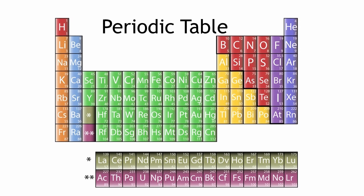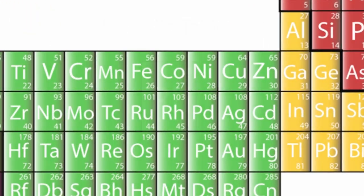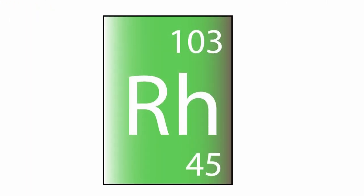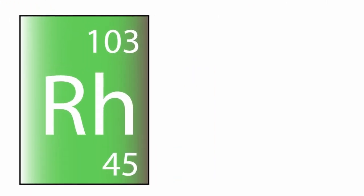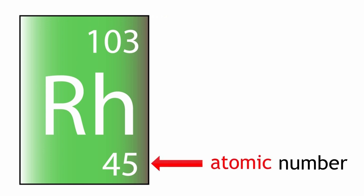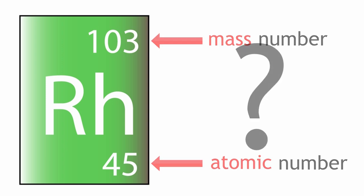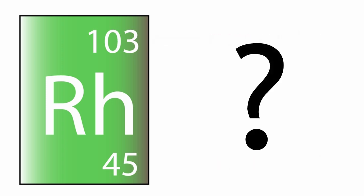When you look at the periodic table, you'll see that each element has its own box, and within that box you'll find two numbers: the atomic number, or proton number, and the mass number. But what do these numbers mean?